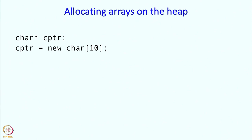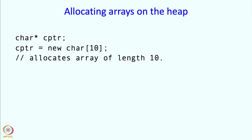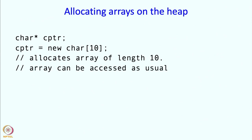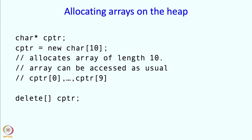You can also allocate arrays on the heap. So say cptr is a pointer to char. I can say cptr equals new char 10 — this will give me an array of length 10, an array of char. Now I can start accessing the array as usual because after all cptr is an address — the address of the starting point of that array. So I can access elements cptr[0] through cptr[9]. After I am done, I write delete square bracket cptr, which causes the allocated array to be deleted. Note that it is not just plain delete but delete with square brackets.